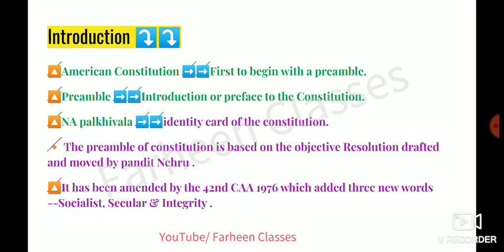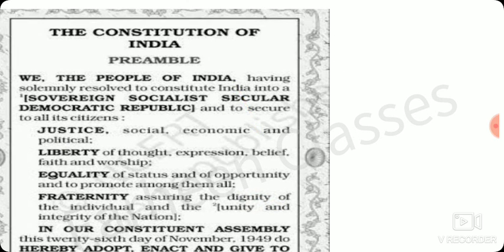Besides this, what is the Preamble in our Constitution based on? It is based on the Objective Resolution which Pandit Nehru moved in the Constituent Assembly — which we studied in detail in the Constituent Assembly chapter. If you haven't seen that, please do watch it. That same Objective Resolution is the basis of this Preamble. Another important fact is that the 42nd Constitutional Amendment Act of 1976 added three important new words to our Preamble: first, Socialist; second, Secular; and third, Integrity.